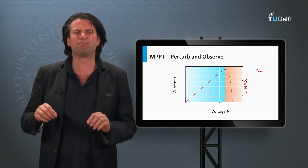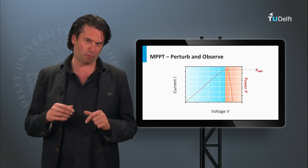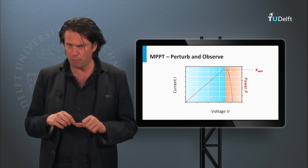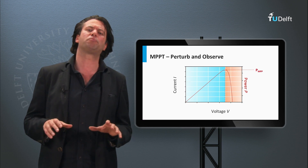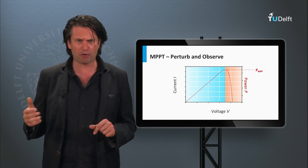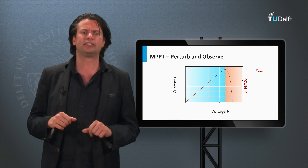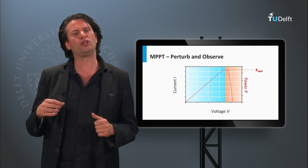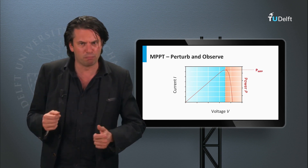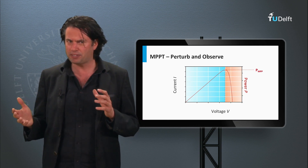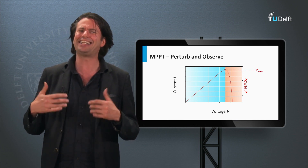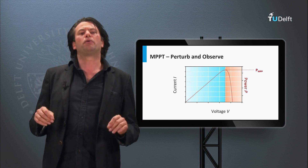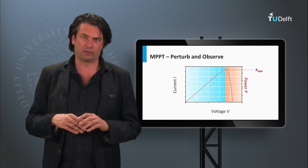Now let's look at the more involved kind of MPP tracking: direct MPP tracking. This kind of MPP tracking involves direct measurements of current, voltage or power and a more accurate, faster response than the indirect method. Due to time constraints we shall look at a couple of the most popular algorithms, which are sometimes also classified as hill-climbing algorithms.